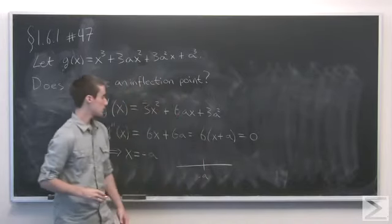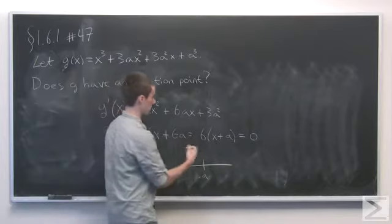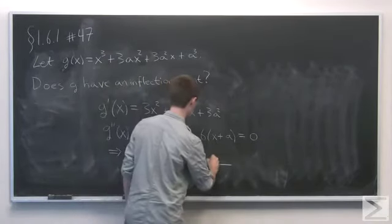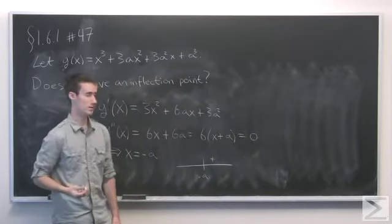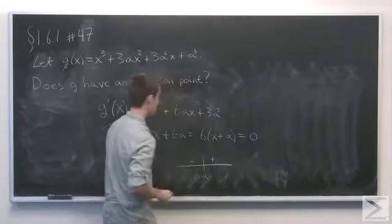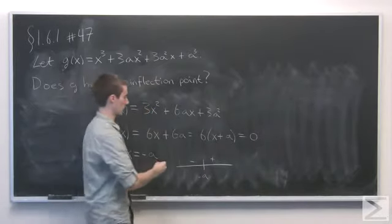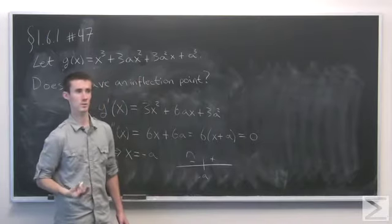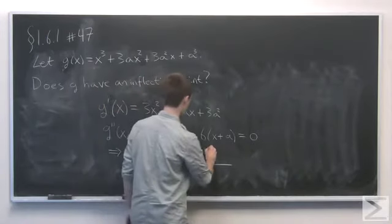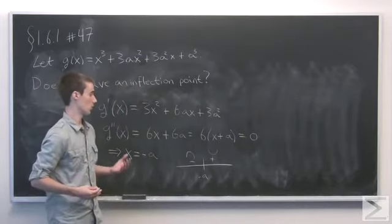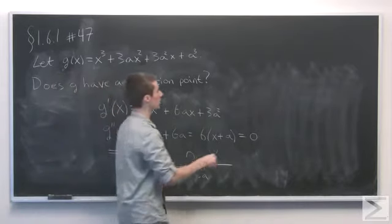than minus a, then the sign is going to be positive. And if x is less than minus a, the sign will be negative. So it goes from concave down, because the sign of the second derivative is negative, to concave up, because the sign of the second derivative is positive. So the point x equals minus a is indeed an inflection point.